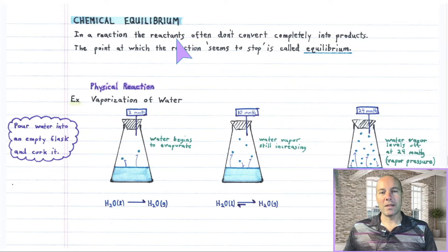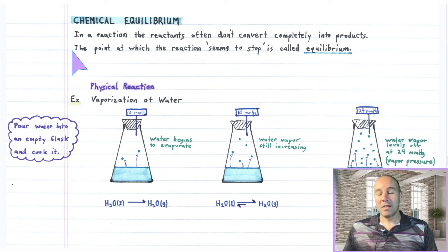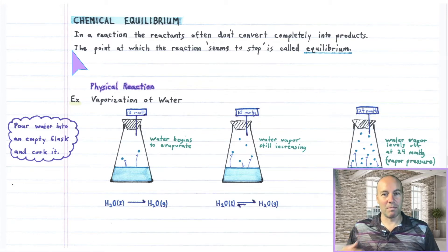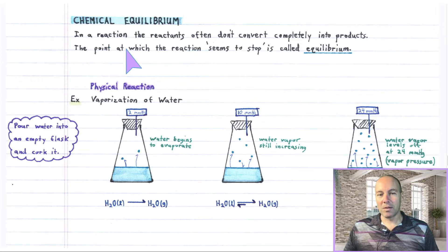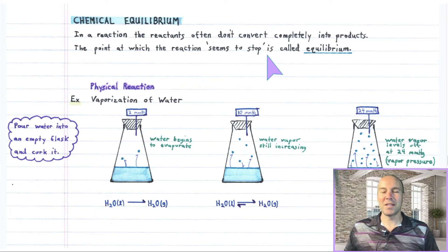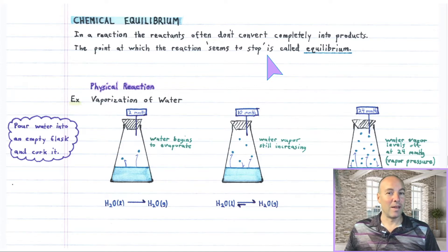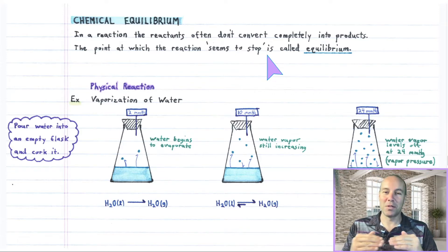In a reaction, the reactants often don't convert completely into products. There is a point at which the reaction stops and the amount of product material levels off. That point at which the reaction seems to stop is called equilibrium. It doesn't really stop — the reverse reaction begins to occur as well. The forward and reverse reactions cancel each other out, so it seems to stop.